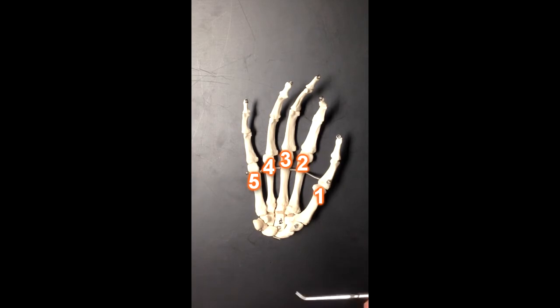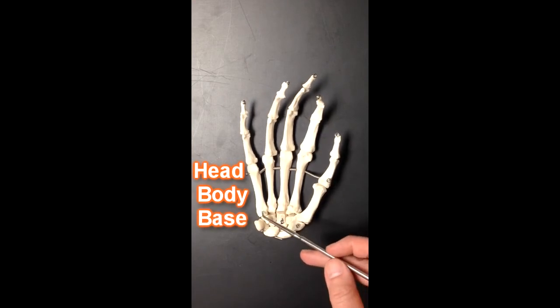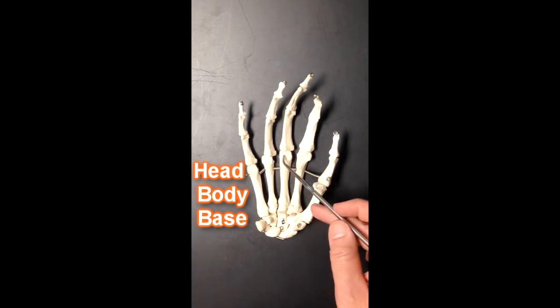Now each metacarpal has a head, a body, and a base. So each one has a base, each one has the body, and each one has a head.